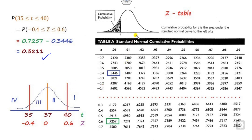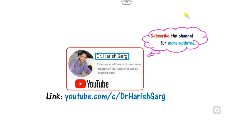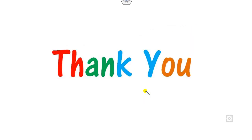This Z-table can easily be obtained from any statistics textbook, or you can simply search for it on Google. We will see some more lectures on the optimization technique in our next class. Till then, you can simply follow this link for finding the various videos. Best of luck, students.